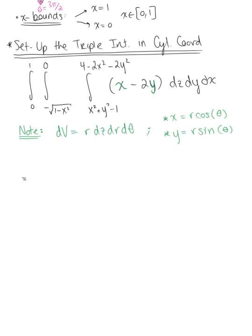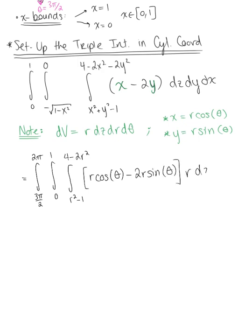Rewriting, the outer integral is θ from 3π/2 to 2π, the middle integral is r from 0 to 1, and the inner integral is z from r² − 1 to 4 − 2r². The integrand becomes r cosθ − 2r sinθ, multiplied by r dz dr dθ. We notice a greatest common factor of r in the brackets, so factoring that out gives (cosθ − 2 sinθ) · r², with dz dr dθ.